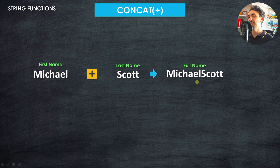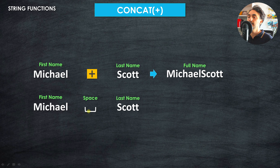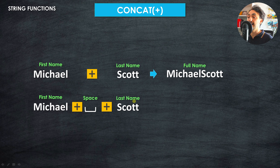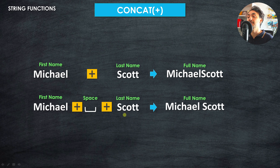If we check the full name, we want to have a separation between the first name and the last name in the output, so we usually use a space between them. We just add one more plus operator: Michael plus space plus Scott, giving us 'Michael Scott'. With the plus operator, we can structure anything we want by combining multiple string values together.